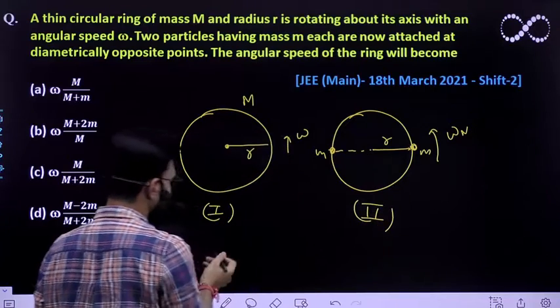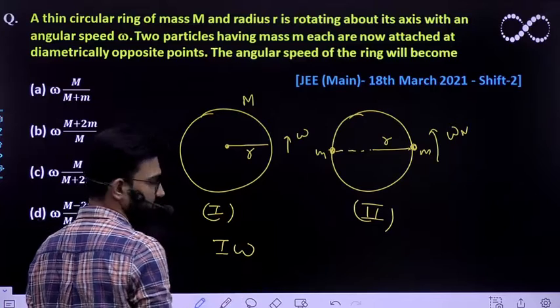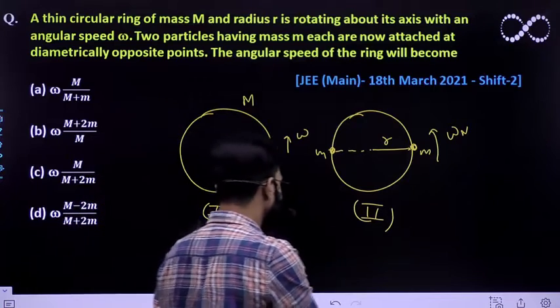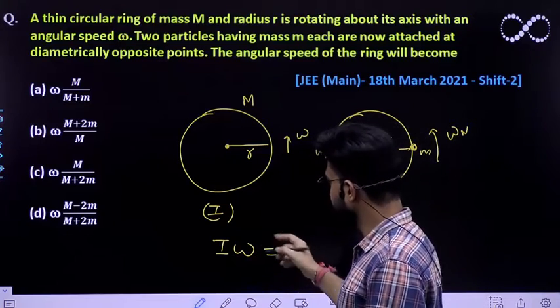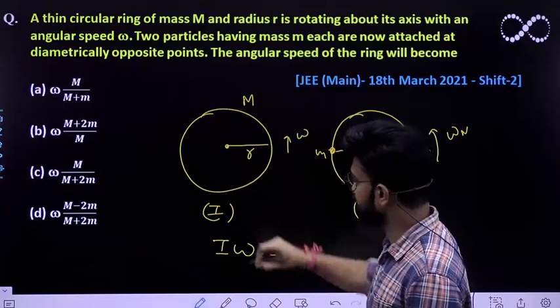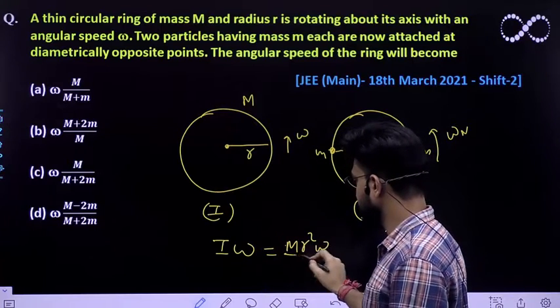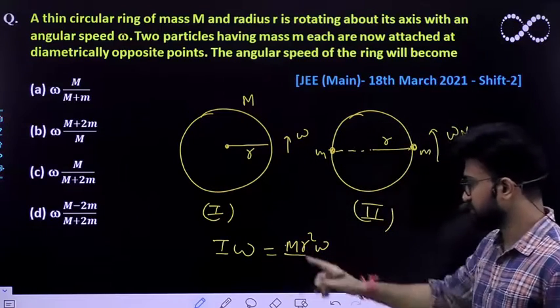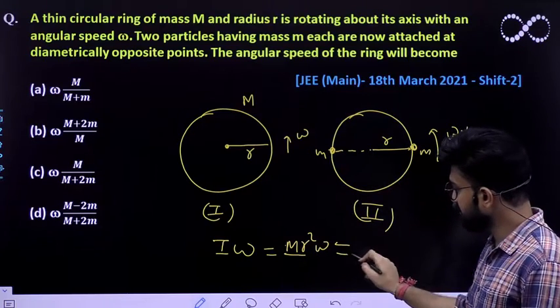The angular momentum is equivalent to I times omega. Moment of inertia multiplied by angular velocity. I would be equivalent to - we know that the moment of inertia of a ring is MR square. This is the moment of inertia of ring, which is MR square multiplied by omega.